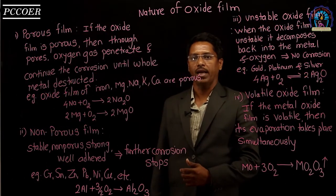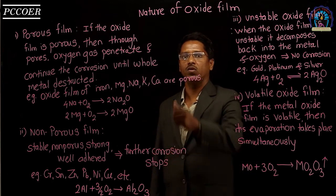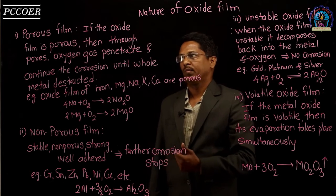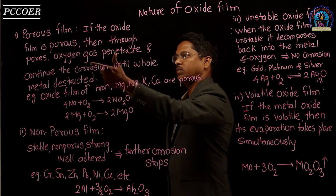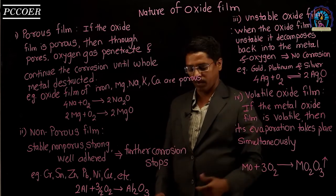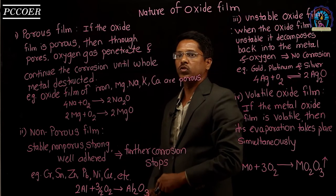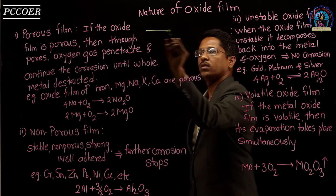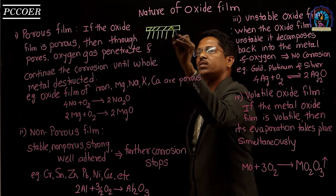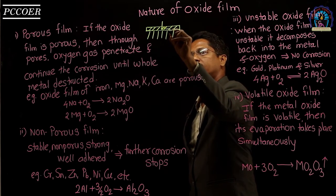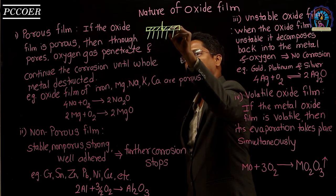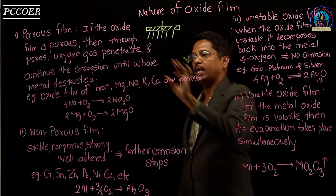In the last step of the mechanism of dry corrosion, there is a formation of an oxide film. There are generally four types of oxide film: porous, non-porous, unstable, and volatile. In the case of a porous oxide film, if the oxide film formed is porous in nature, further corrosion takes place. Oxygen penetrates through the pores, and in this way the whole metal gets destructed.